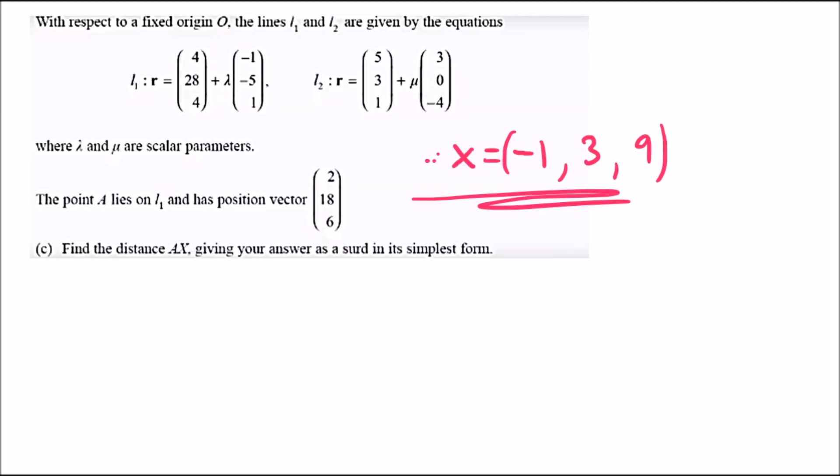For part c, we need to calculate the distance AX and reduce the answer as a simple surd. To calculate this is very easy. The distance AX simply means from A to X. To easily calculate, we just take the difference X minus A. The key idea is you always do the second minus the first.